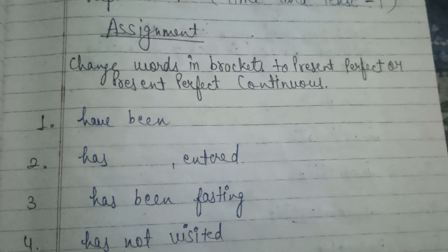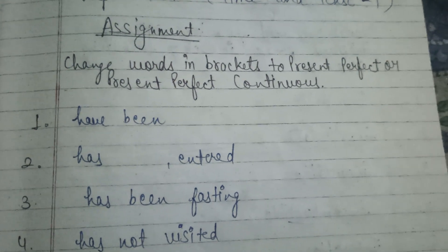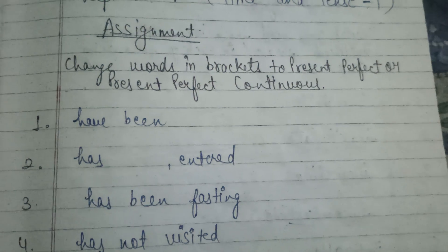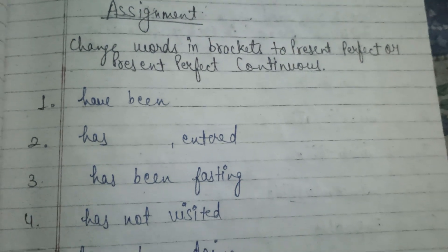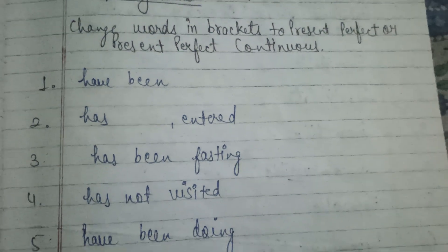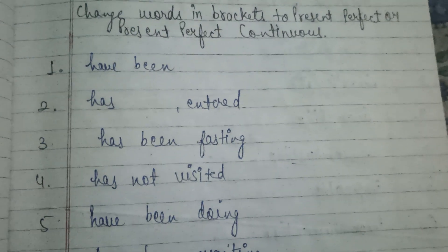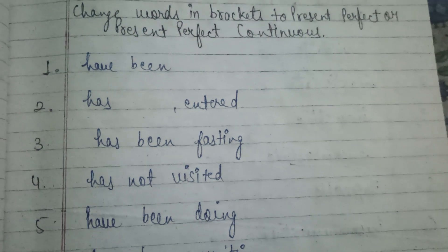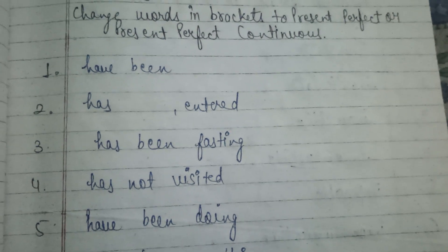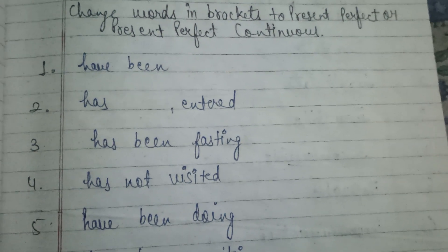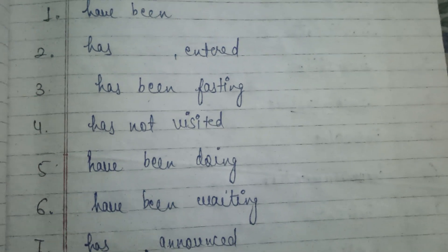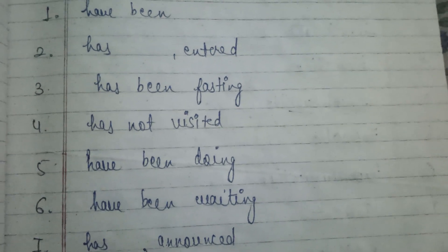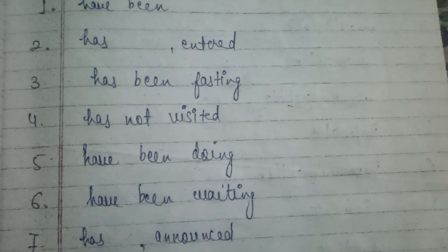Change words in bracket to present perfect or present perfect continuous. 1st answer is have been. 2nd answer is has entered. 3rd answer is has been fasting. 4th answer is has not visited.